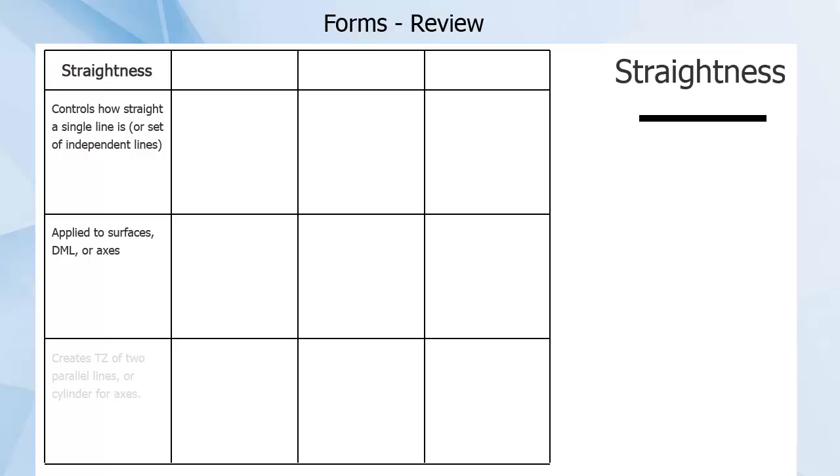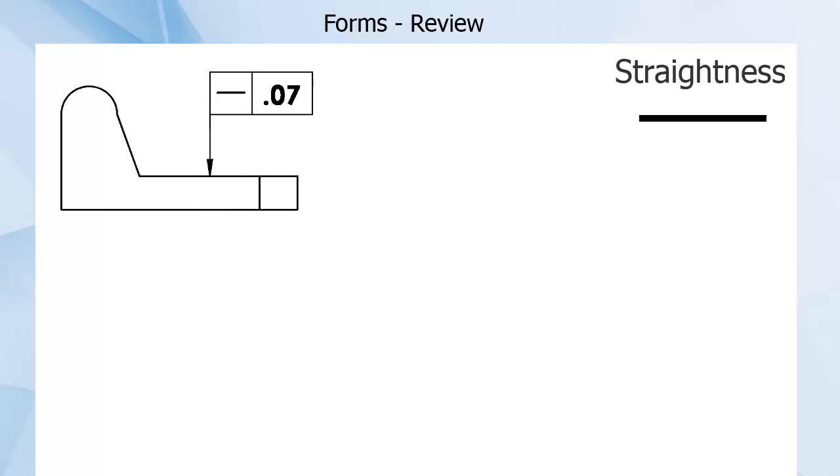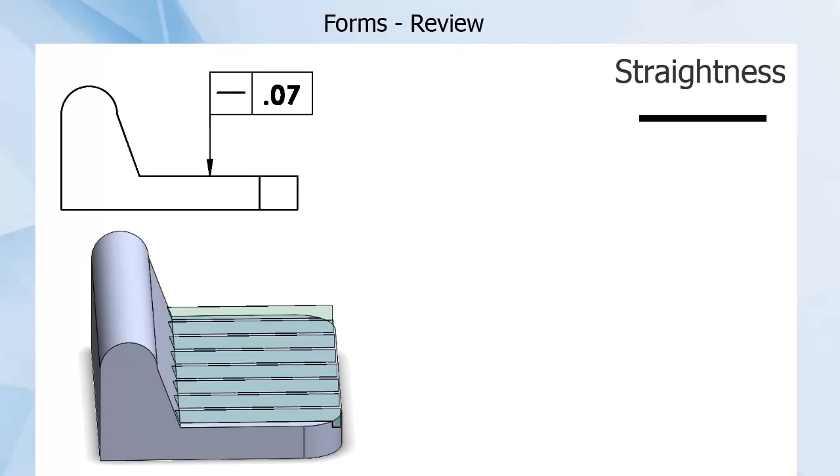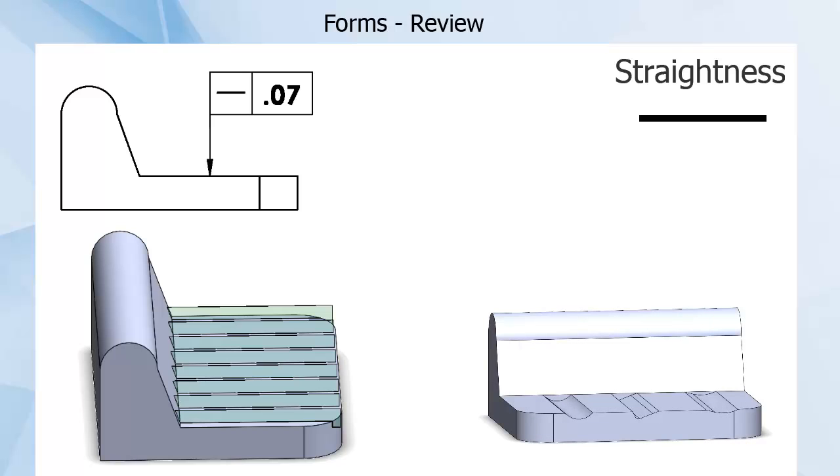Straightness creates a tolerant zone of either two parallel lines or a cylinder for axial straightness. When applied to a three-dimensional part, it applies to every cross-section of the part, but independently of each other, allowing potentially undesired effects such as waviness.